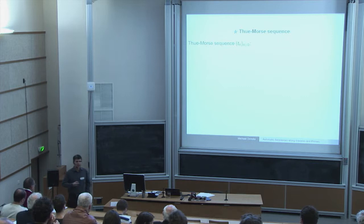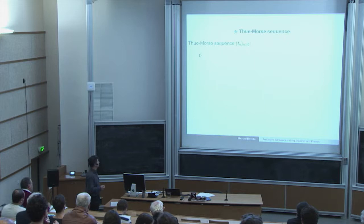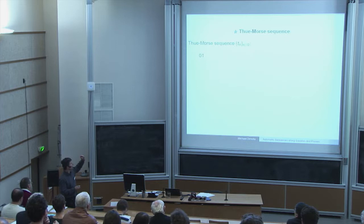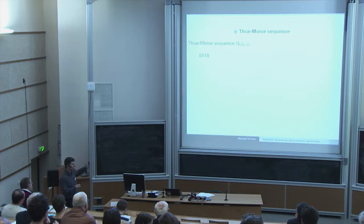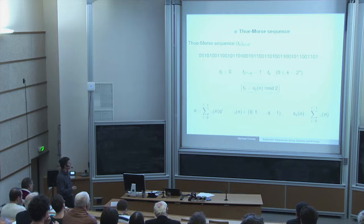The classical Thue-Morse sequence can be defined in several ways. One of the most easy descriptions is a recursive one: you start with zero, then append the one and invert the sequence, replacing zero by one and one by zero, then append. So zero-one goes to one-zero, and you recursively apply this procedure. This gives the Thue-Morse sequence, which is closely related to the binary sum of digits function.